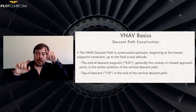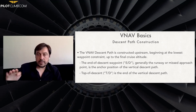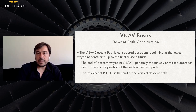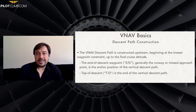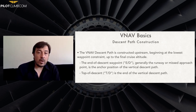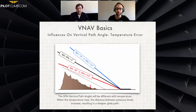The VNAV basically creates a path according to all the altitude constraints and creates a path — usually a three-degree glide angle — all the way to the top of descent, which is the end of the vertical descent path and the beginning of our top of descent.